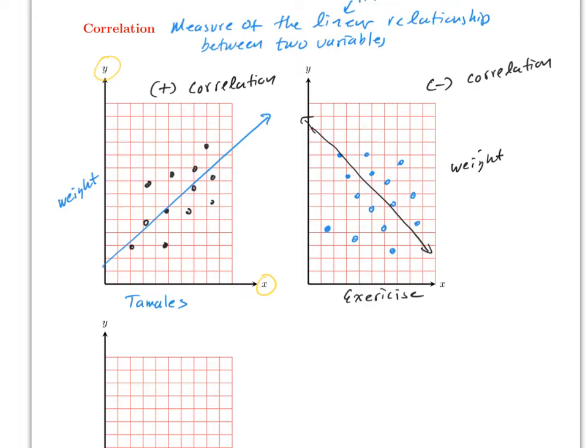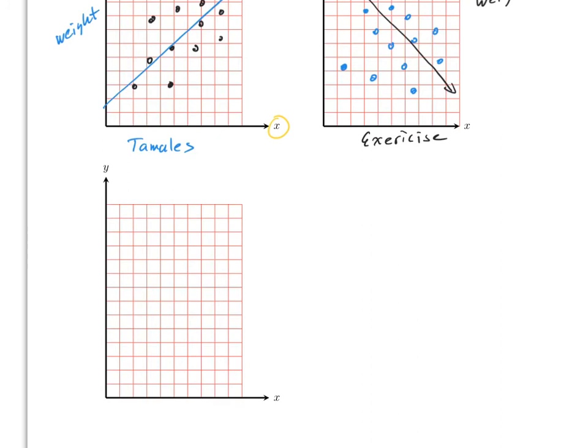An example of negative correlation: the more you exercise, the less your weight will be — in theory. The last case is a scatter plot that looks flat, where the correlation will be zero, meaning no correlation. In algebra, a flat line has a slope of zero.